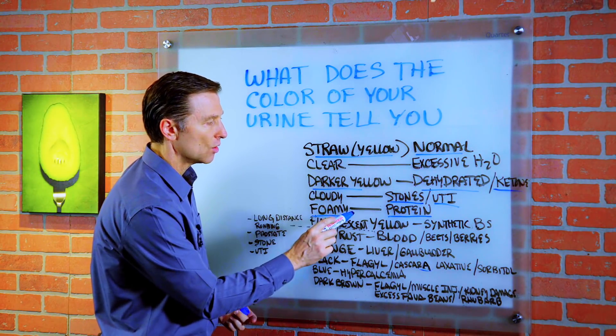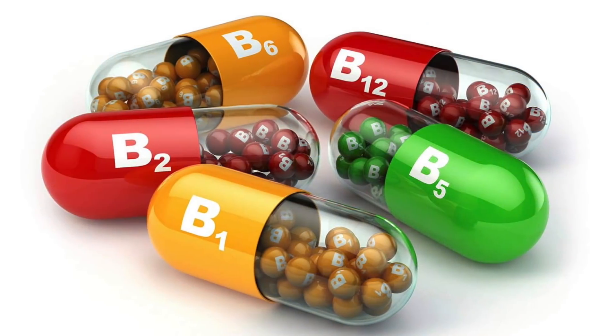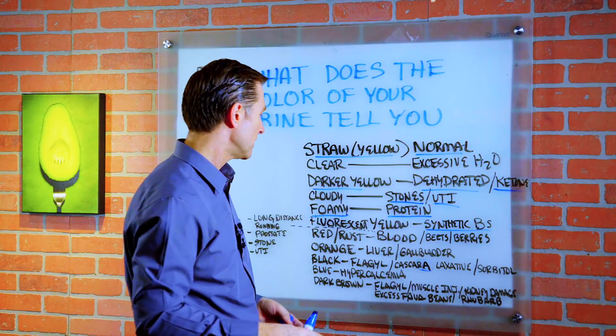If it's fluorescent yellow, it could be that you're taking synthetic B vitamins and your body's trying to get rid of them.